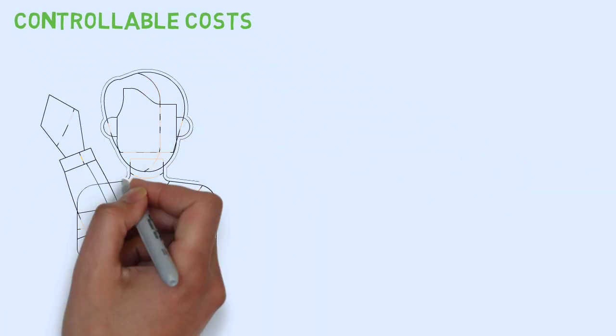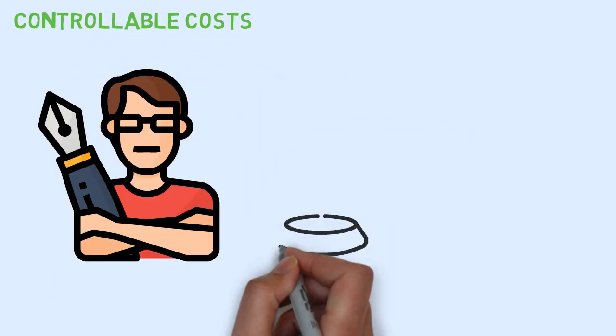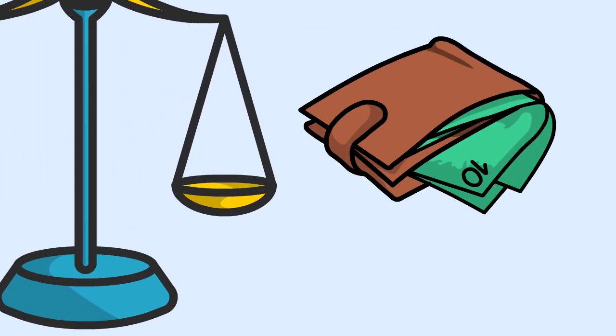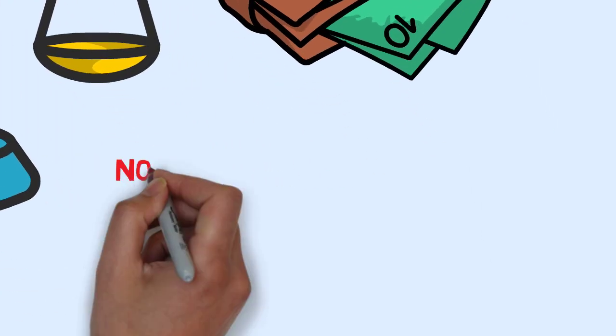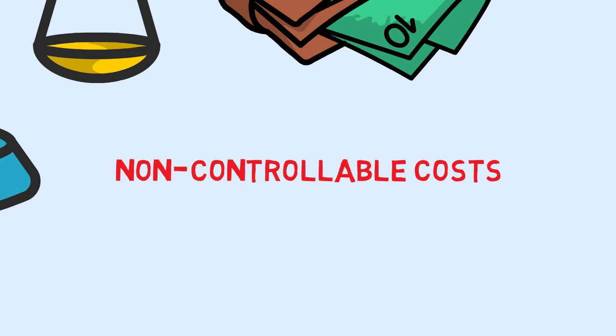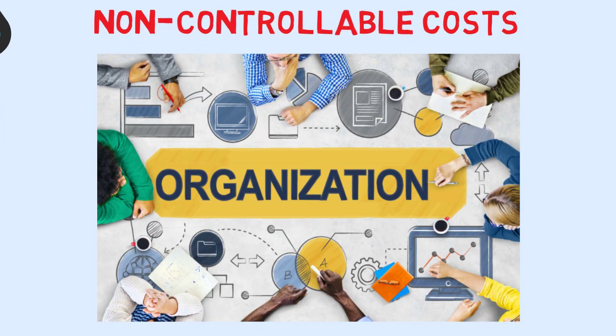Controllable and non-controllable costs. Controllable costs refer to costs for which the manager has the authority to make decisions about how money will be spent. Non-controllable costs refer to costs that are ordinarily controlled at a higher level in the organization, such as the manager's salary or bonus.